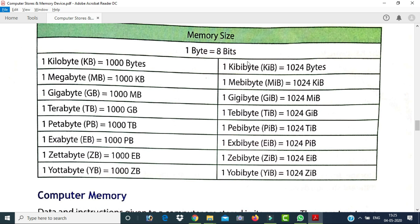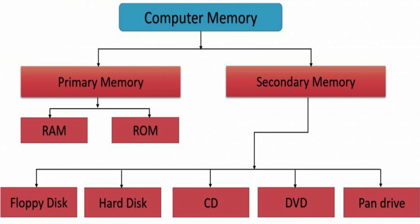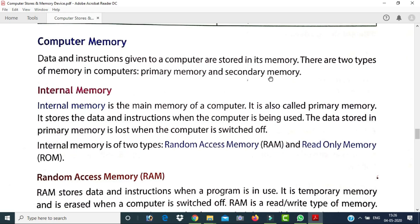You can see this table to understand the measurement of memory sizes in a computer. There are two types of memory in a computer: the first is primary memory and the second is secondary memory. Primary memory is also called internal memory, and secondary memory is also called external memory.